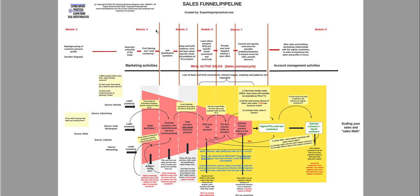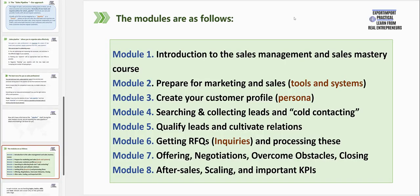We can say for sure that most sales professionals do not have this kind of complete overview and strategy for how to actually organize and execute the sales in the company. So if you have organized the sales systems and processes in the same way in your company, then we guarantee to you that you are going to get really good results, whatever you are selling. This will be the main topic of the Sales Mastery Online course — to take you through this whole sales pipeline from the very beginning to the end. Because this topic is very wide, we have divided it into modules and lessons, and there are eight modules in our Sales Mastery Online course.